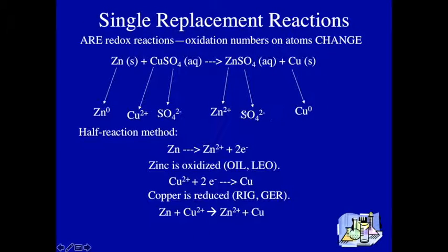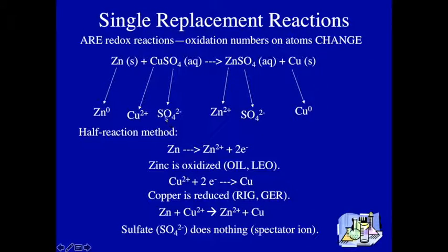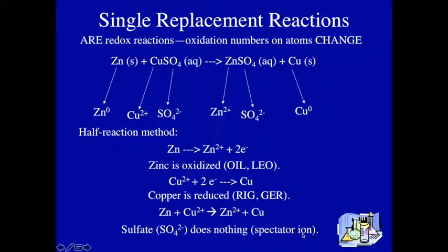Sulfate was just here to balance the charges. Did sulfate actually do anything? No, it did nothing in this reaction. It went in and came out looking exactly the same. So we call that a spectator ion, which is even more important when we get to double replacement reactions.